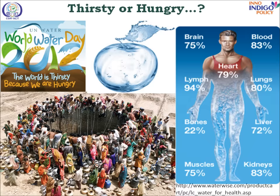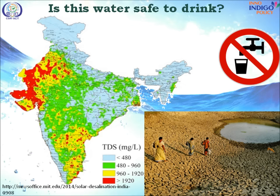About 70–80% of the human body consists of water, and the 22nd of every March is celebrated as World Water Day. This map clearly shows the TDS levels across the country. According to WHO rules, TDS should be below 500 milligrams per liter, but we can see that in many parts of India it is above 500 milligrams per liter.